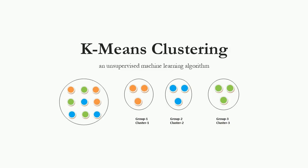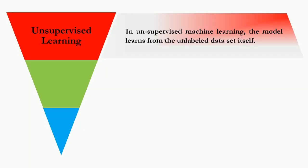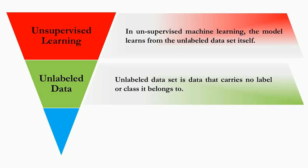K-means clustering is a popular machine learning model that is used to cluster the dataset into K number of clusters. The different colored balls are clustered into three groups based on color as the common property. K-means clustering is an unsupervised machine learning model, hence the model learns from the dataset itself to cluster among themselves. Being an unsupervised machine learning model, the dataset used for clustering is an unlabelled dataset.